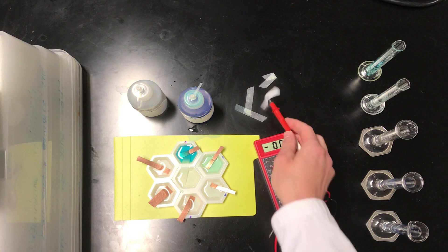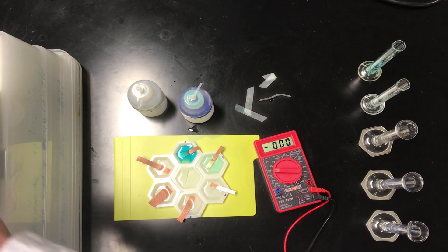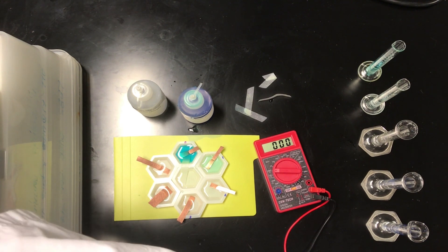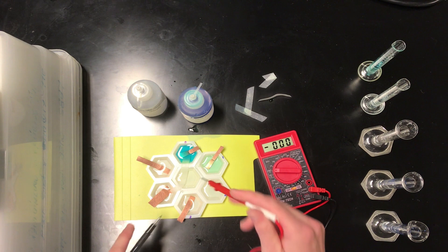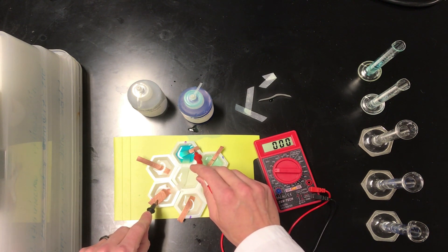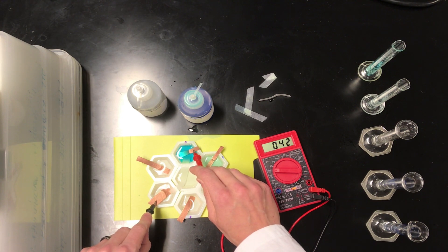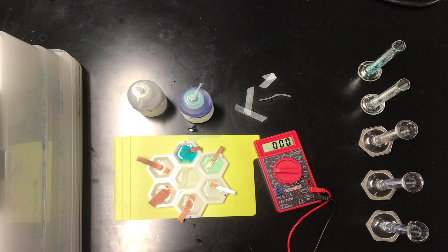All righty, we're going to remove that piece of filter paper and now move on to half cell 4. There we go. Now we're seeing about 40 millivolts. Again, looking for that maximum value. Let's call it 42 millivolts for the maximum.